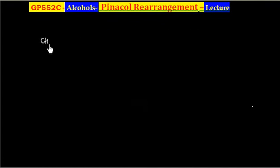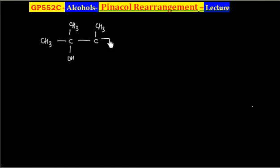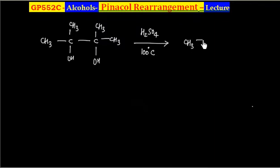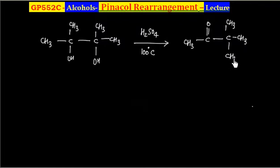In this lecture, we will discuss about pinacol rearrangement. If I have this compound — a diol with two OH groups on adjacent carbons — and if this is treated with H2SO4 around 100 degrees centigrade, this will give a rearranged ketone product. This reaction is called pinacol rearrangement.